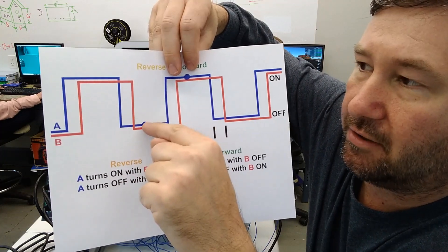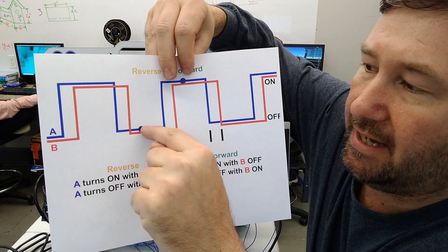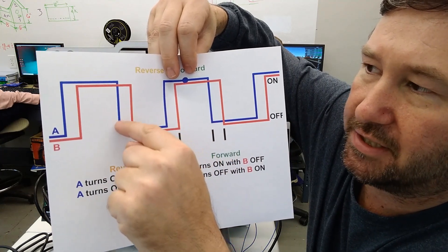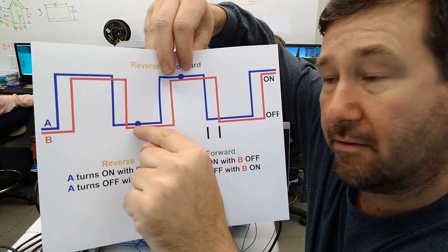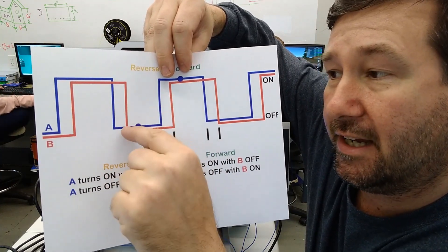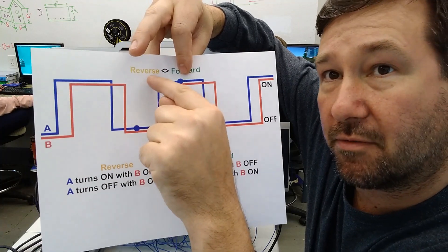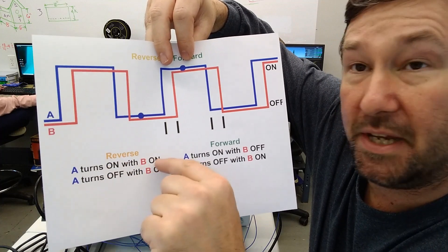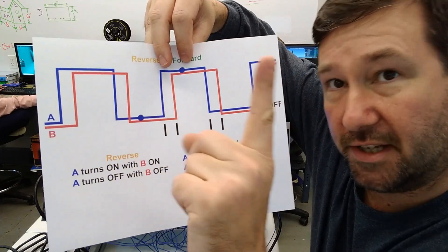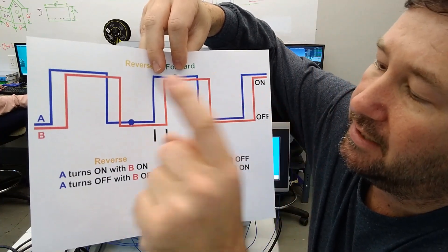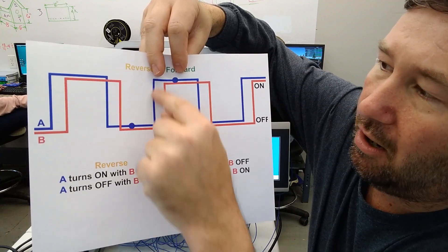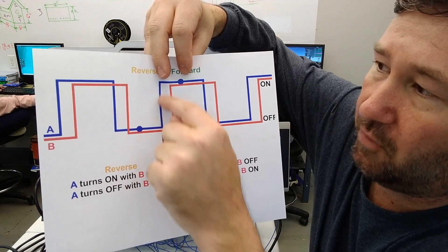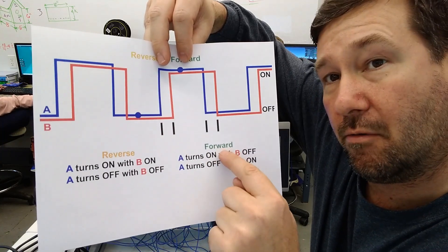First, A turns on with B on. So if we go A this direction, B is off. But if we go this direction, B is going to be on. So A, when it goes on and B is off, that's going to be moving in this reverse direction. And so that's what I've done right here is I've shown A turns on with B on, we're going reverse. So that's one count in reverse. Then we can also be A turns on with B off. So this way B is on, this way B is off. So that's going to be forward direction, one count.